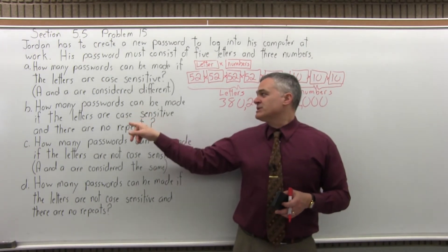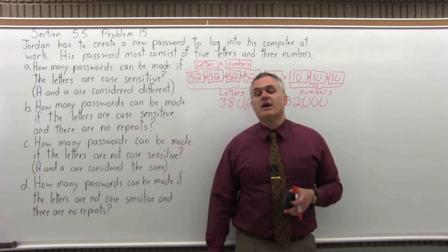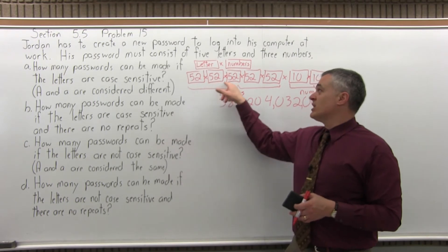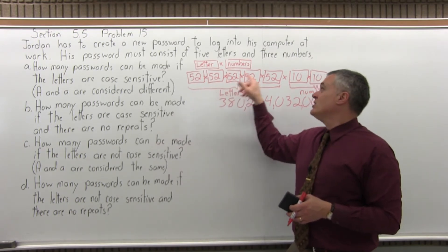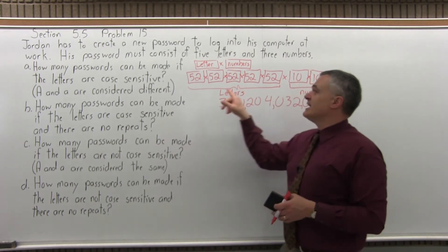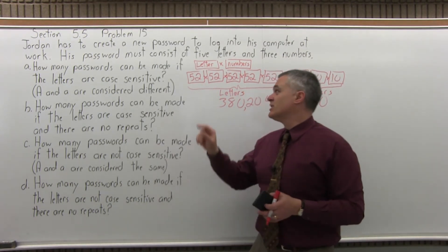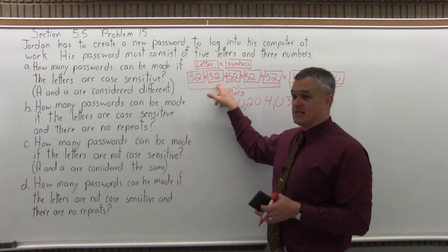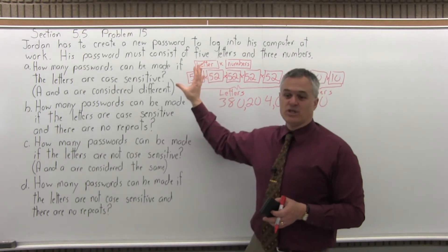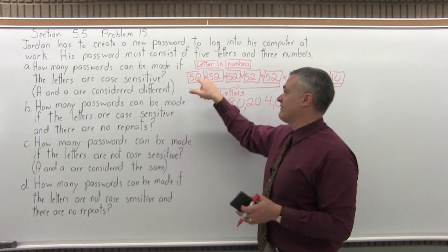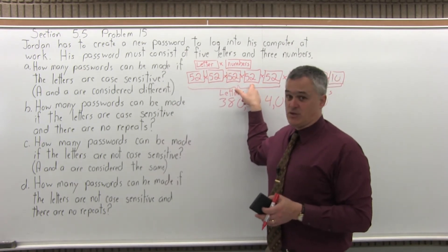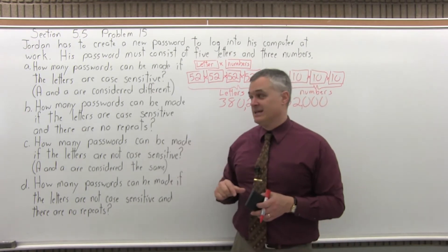Part B says how many passwords can be made if the letters are case sensitive but there are no repeats? So you can't use the same letter twice, and you can't use the same number twice — you couldn't have like eight, eight. And remember it's case sensitive, so you could have capital B then lowercase b, but you couldn't have capital B, capital B. And they don't have to be next to each other — you couldn't have capital B in position one and capital B again in position four. You just can't have anything repeated.